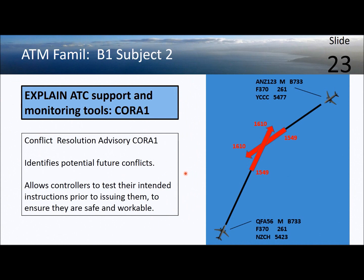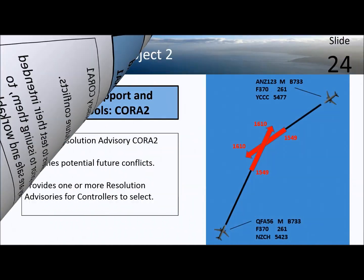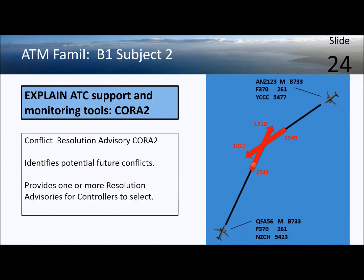CORA — conflict resolution advisory. CORA one identifies potential future conflicts and allows controllers to test their intended instructions prior to issuing them. CORA two also identifies potential future conflicts but goes further, providing one or more ready-made resolution advisories for the controllers to select. CORA two actually calculates a number of different ways to avoid the conflict and then offers those options to the controller.